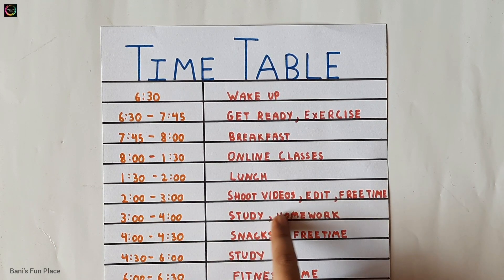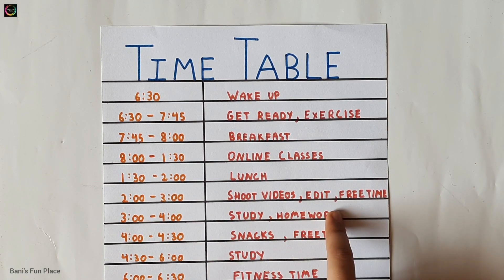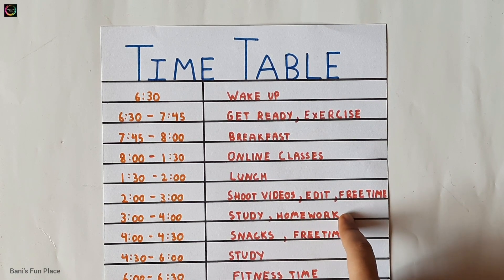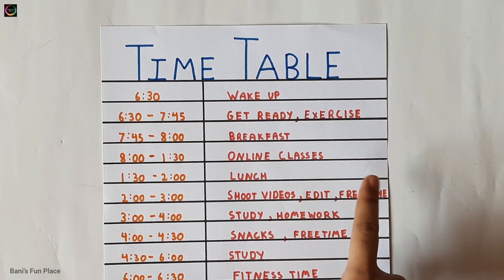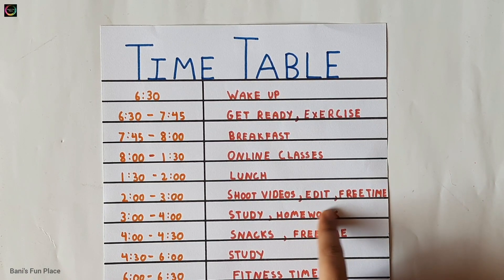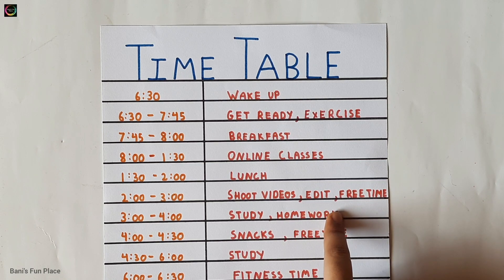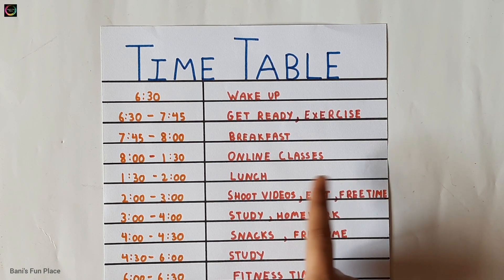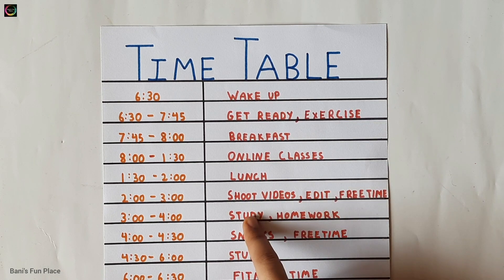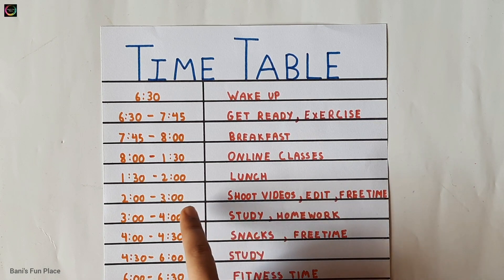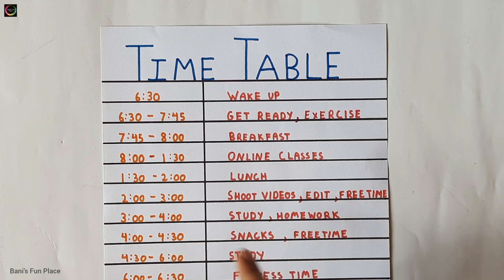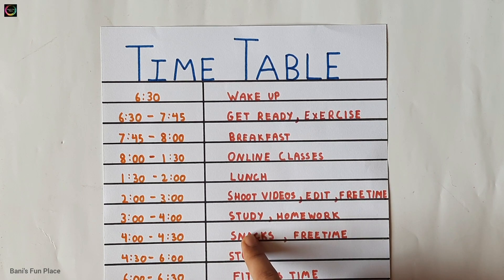At the 3 to 4 study time I usually complete my homework because I have to submit it the next day. So I complete my homework first, and if I'm done or if I have less homework that day, I complete it and then I study. After 4 o'clock, from 4 to 4:30, it's my snacks time and free time also.